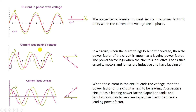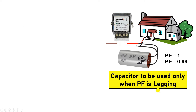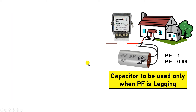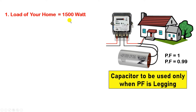So remember: we use a capacitor only to improve lagging power factor; it does not improve leading power factor. To know whether your home's power factor is lagging or leading, use a power factor meter. Now, to find the value of the capacitor, you must know three things: first, what is the total load of your home.